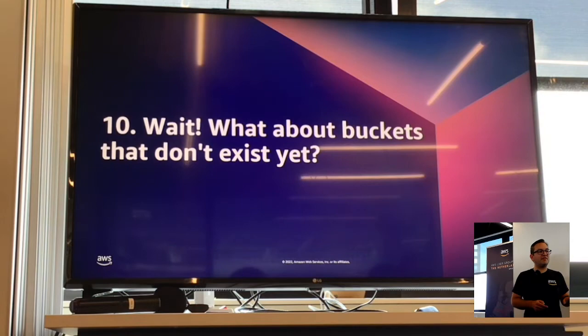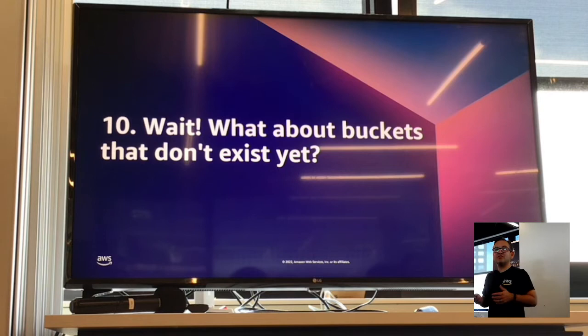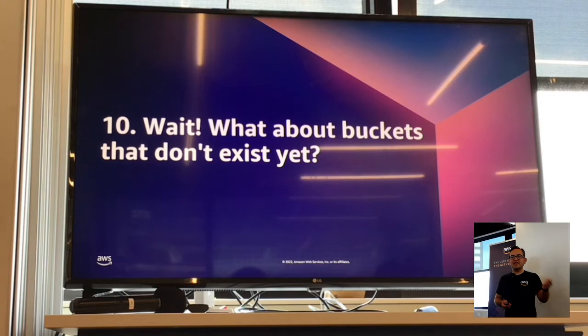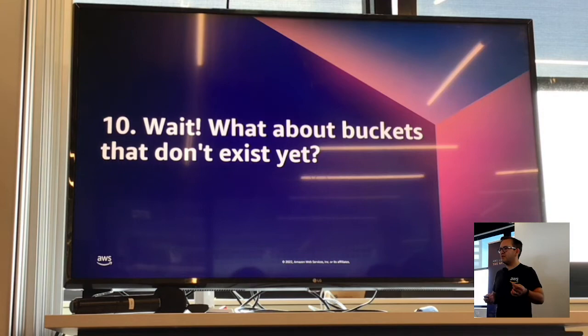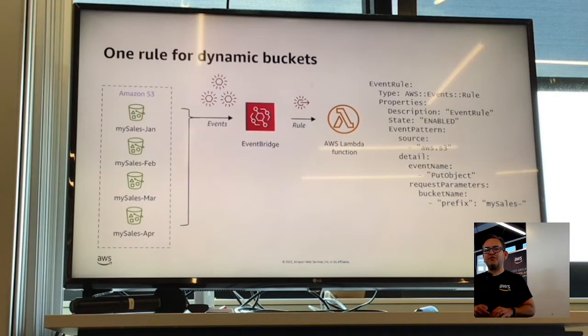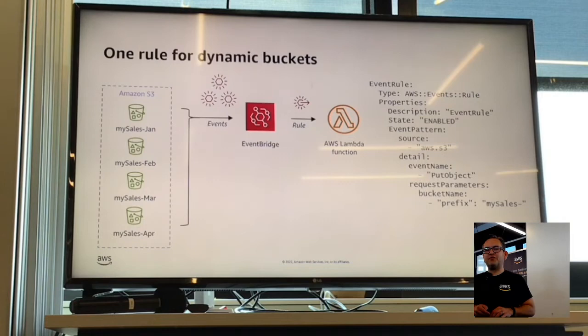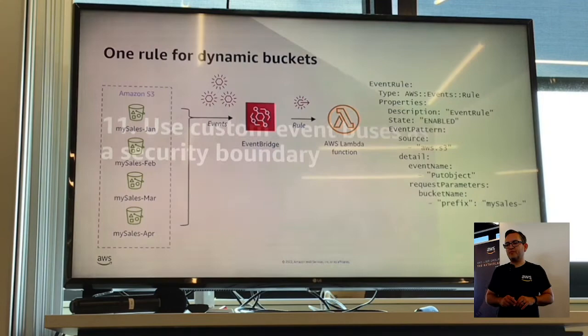Taking it one step further: this also allows your application to work for buckets that don't exist yet. You can bind a Lambda function to an S3 bucket that nobody's published yet. All we've done is change the bucket name prefix filter, saying prefix equals my-sales-dash. In the future, as other people start adding new buckets that meet that naming criteria, the application will continue to work without needing any changes.